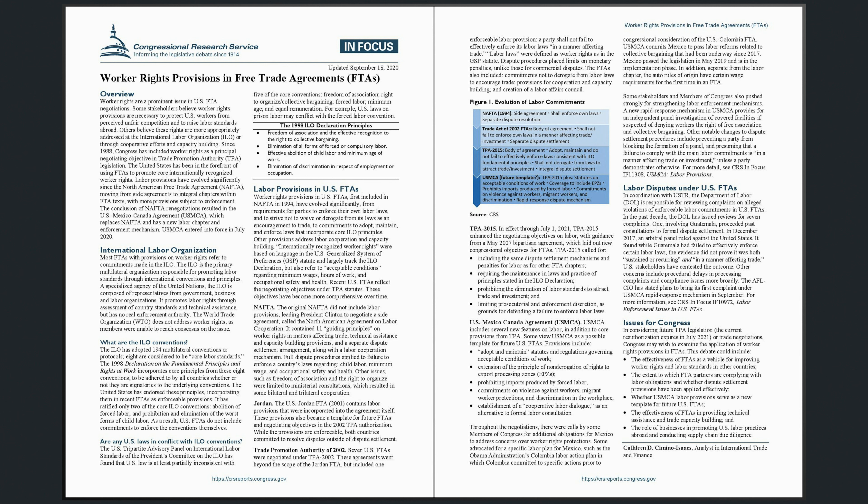NAFTA. The original NAFTA did not include labor provisions, leading President Clinton to negotiate a side agreement called the North American Agreement on Labor Cooperation. It contained 11 guiding principles on worker rights in matters affecting trade, technical assistance and capacity building provisions, and a separate dispute settlement arrangement, along with a labor cooperation mechanism. Full dispute procedures applied to failure to enforce a country's laws regarding child labor, minimum wage, and occupational safety and health. Other issues, such as freedom of association and the right to organize, were limited to ministerial consultations, which resulted in some bilateral and trilateral cooperation.